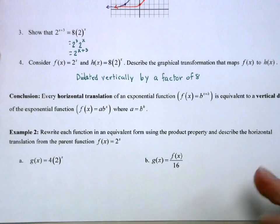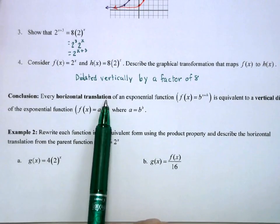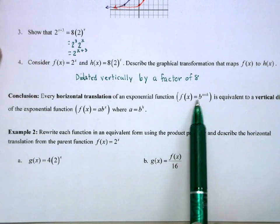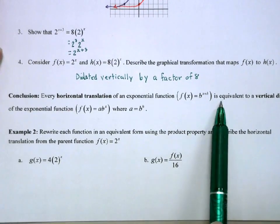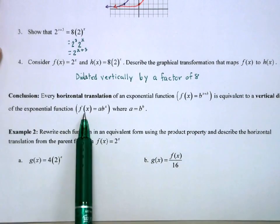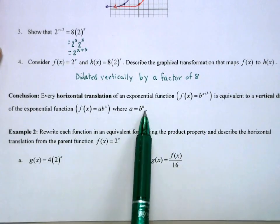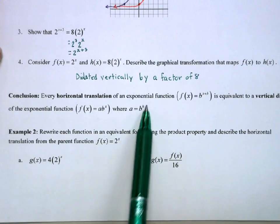So our conclusion is every horizontal translation of an exponential function f of x equals b to the x plus h is equivalent to a vertical dilation of a times b to the x where my a is b to the h.